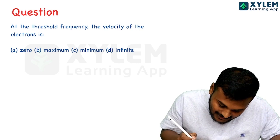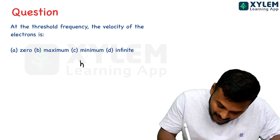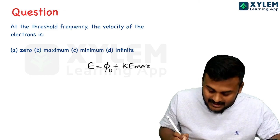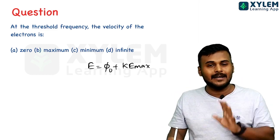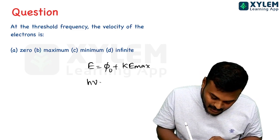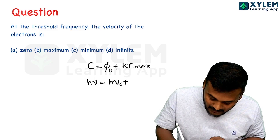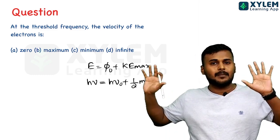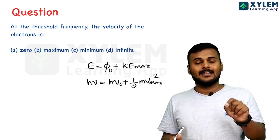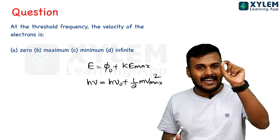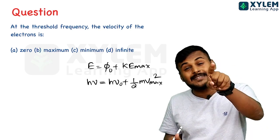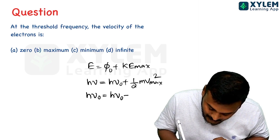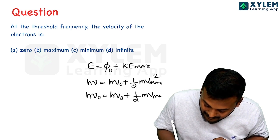Einstein's photoelectric equation: h-nu equals phi-nought plus KE-maximum. This is our equation. E equals h-nu; phi-nought equals h-nu-nought; KE-max equals half m-v-max squared. When the incident light frequency equals the threshold frequency: h-nu-nought equals h-nu-nought plus half m-v-max squared.